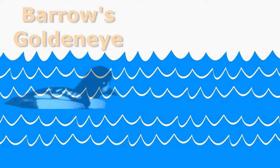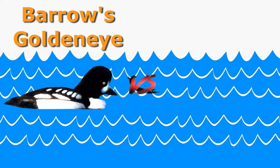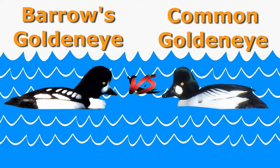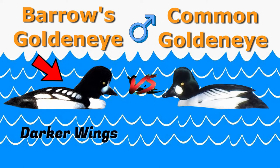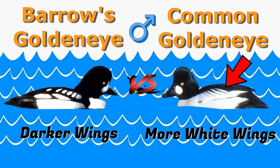We've got the Barrows golden eye versus the common golden eye. So at a distance, these two birds do kind of look similar, but there are a couple defining characteristics that will help you with identification. The first identifying feature on the Barrows golden eye is that the upper part of the wing is much darker — it has a lot more black on it. The common golden eye has a lot more white on its wings, as you can see here.